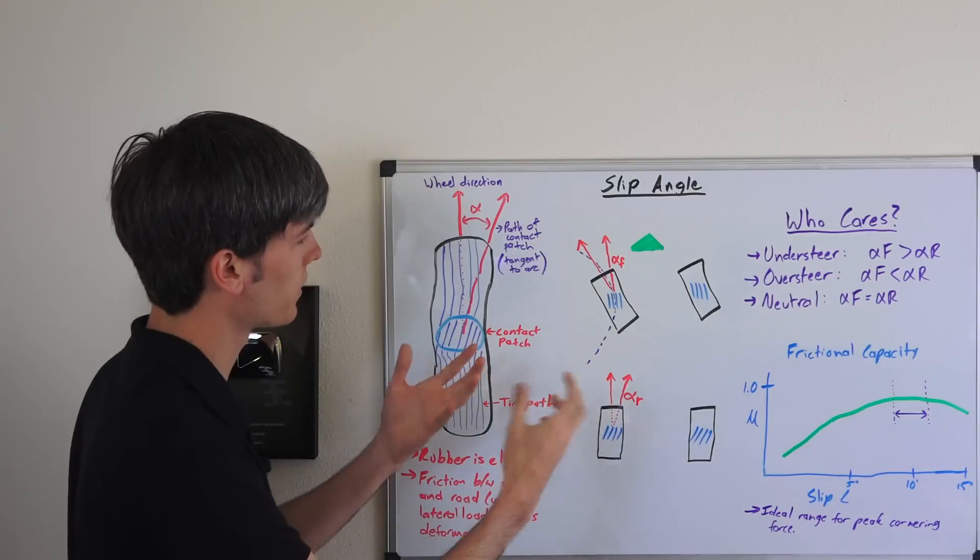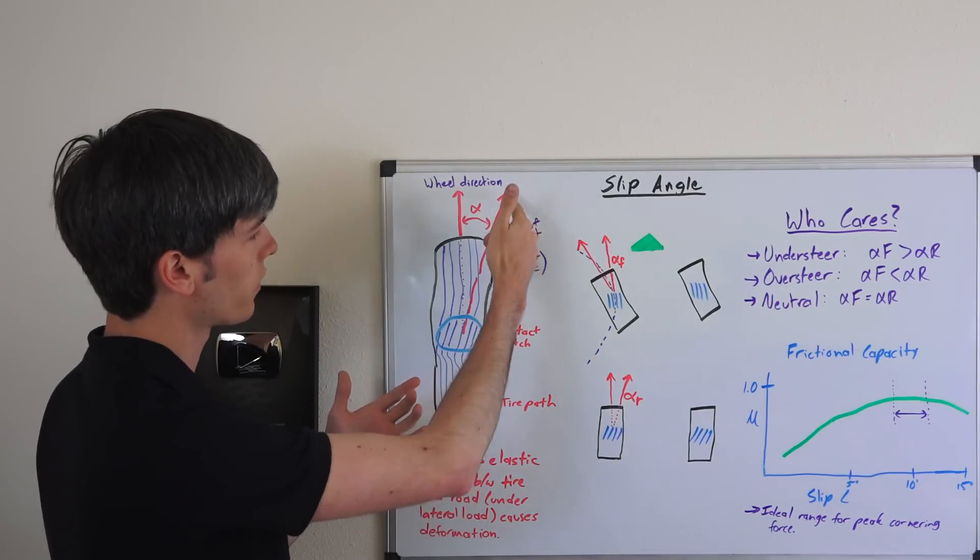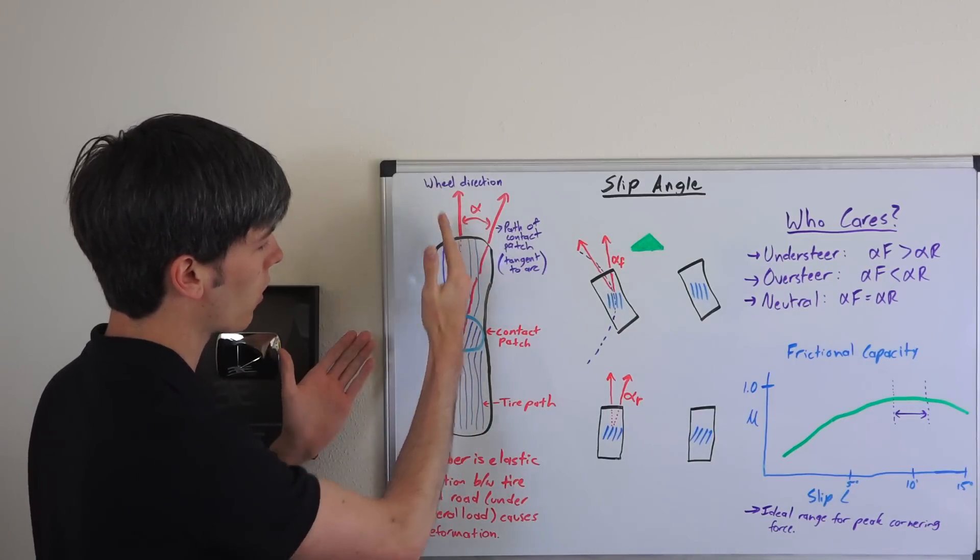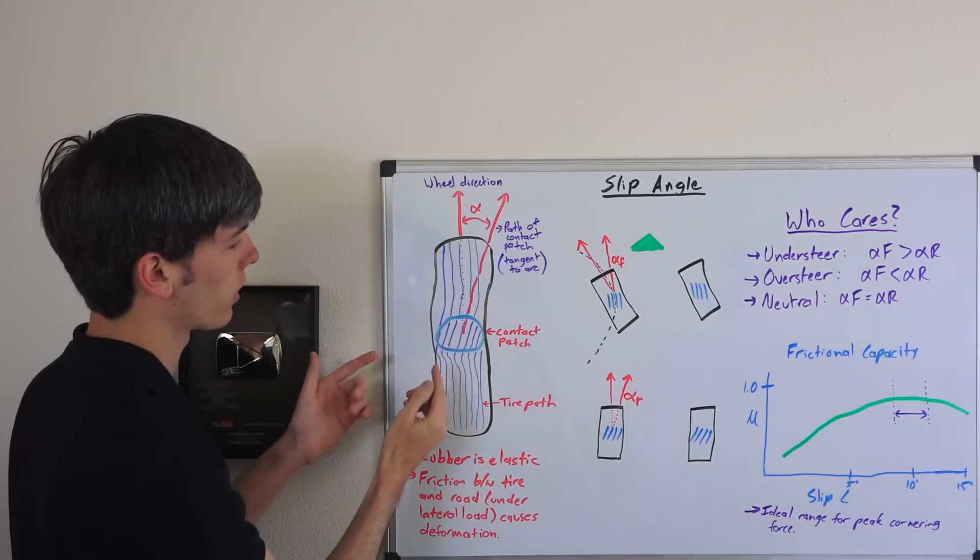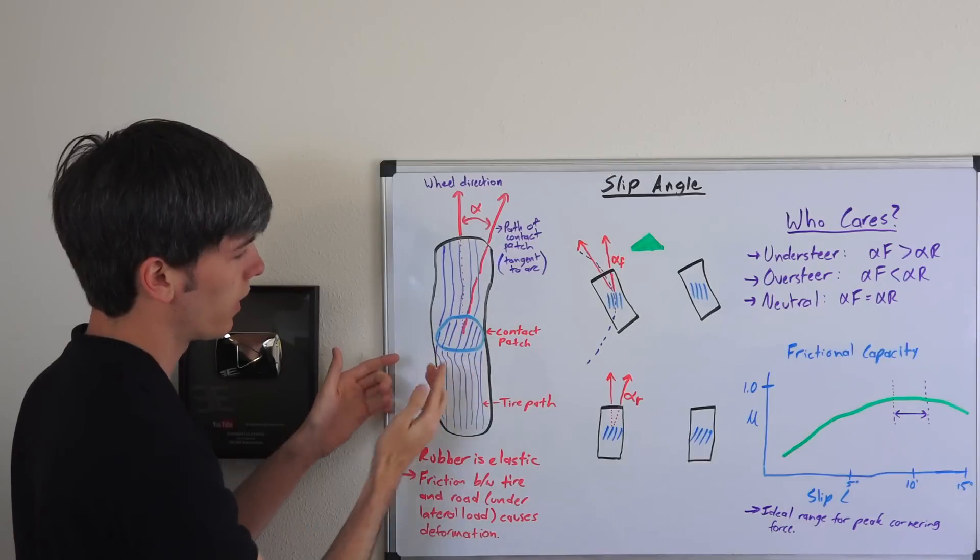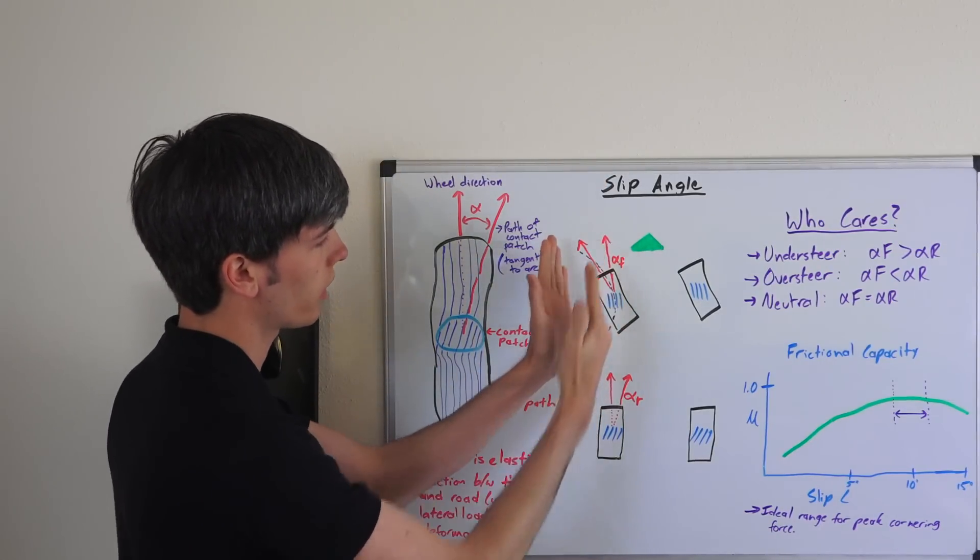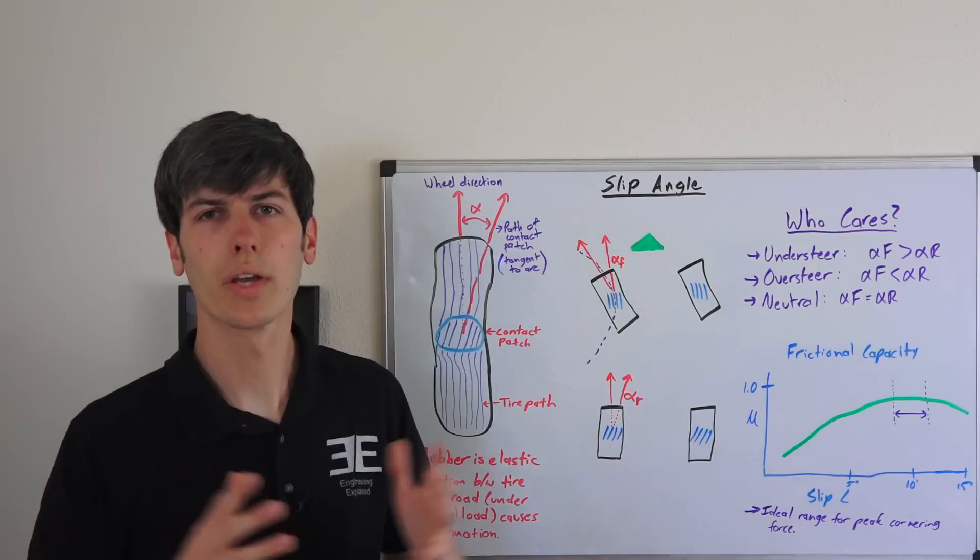So the actual definition is basically this arrow right here is tangent to the arc that the contact patch is traveling along. This is actually a curve right here, and if you follow that curve and then draw a line tangent to it, that's how you can get the exact slip angle.